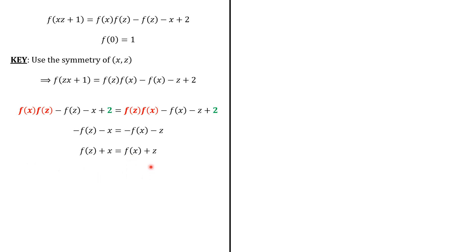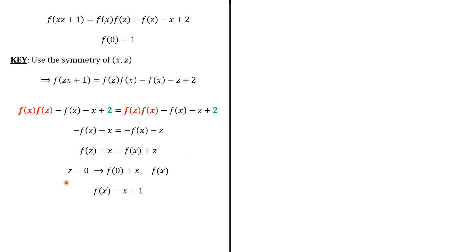Next, we use z = 0, since we know f(0). We get f(0 + x) = f(x + 0), which is f(x). And since f(0) = 1, we have f(x) = x + 1.